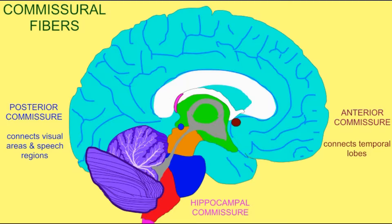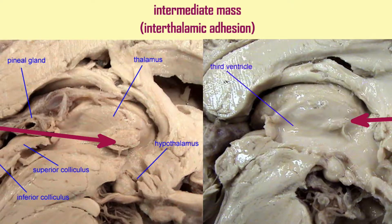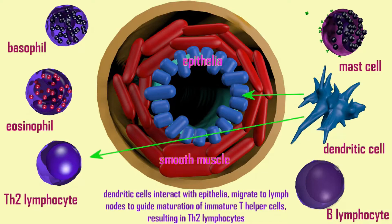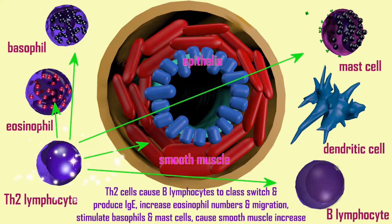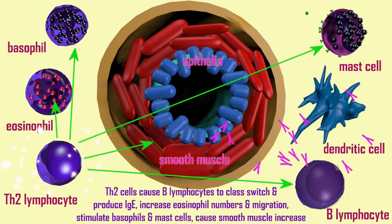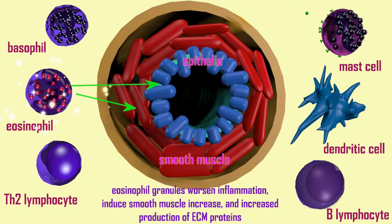Estrogen affects areas of the brain, and there are small differences between regions of male and female brains. Estrogen also affects the immune system, and thus there can be gender differences in disease susceptibility and some of the functioning of the immune system.